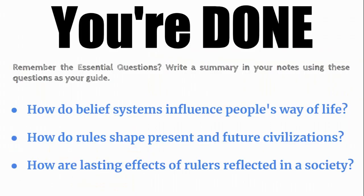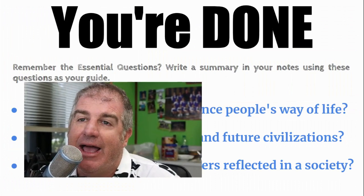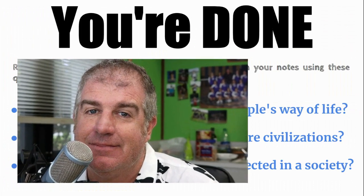That's it for this lesson. Now that you're done, remember the essential questions. Go back into your notes and write a summary using these questions to process what you learned: How do belief systems influence people's way of life? How do rulers shape present and future civilizations? And how are lasting effects of rulers reflected in a society?